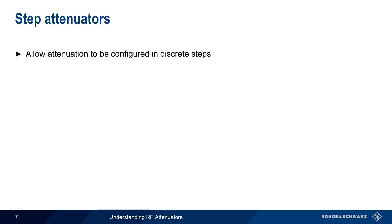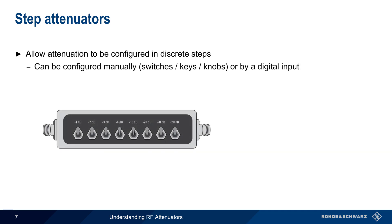Next we'll discuss step attenuators, which allow attenuation to be configured in discrete steps. In some step attenuators, the attenuation is configured by flipping switches or by rotating knobs. For example, to create a total attenuation of 18 dB, we would flip the switches for 2, 6, and 10 dB.